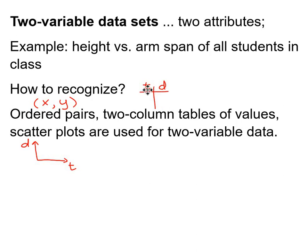How would you organize it? Well, you organize it in a table, such as in this case, t and d, time and distance, or ordered pairs like x and y in the Cartesian plane, two columns in a table of values, or scatterplot. All of those are used for two variable data.